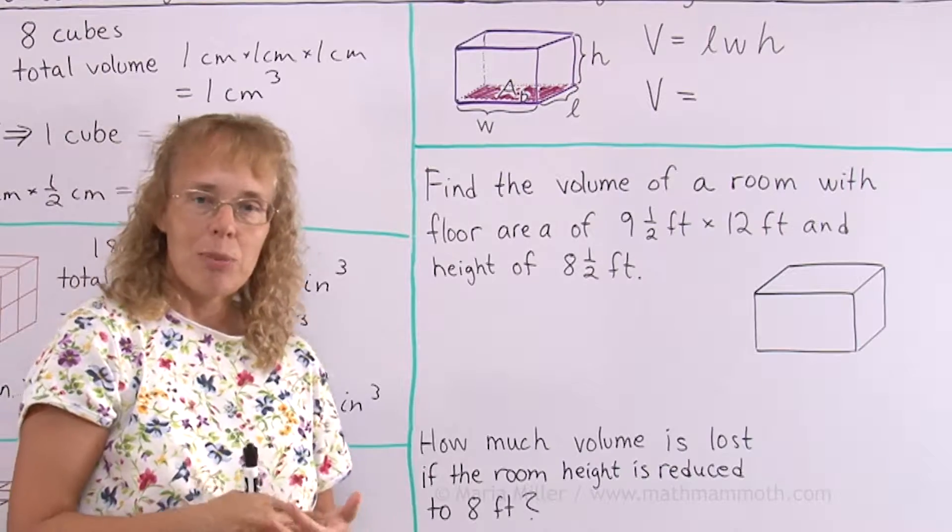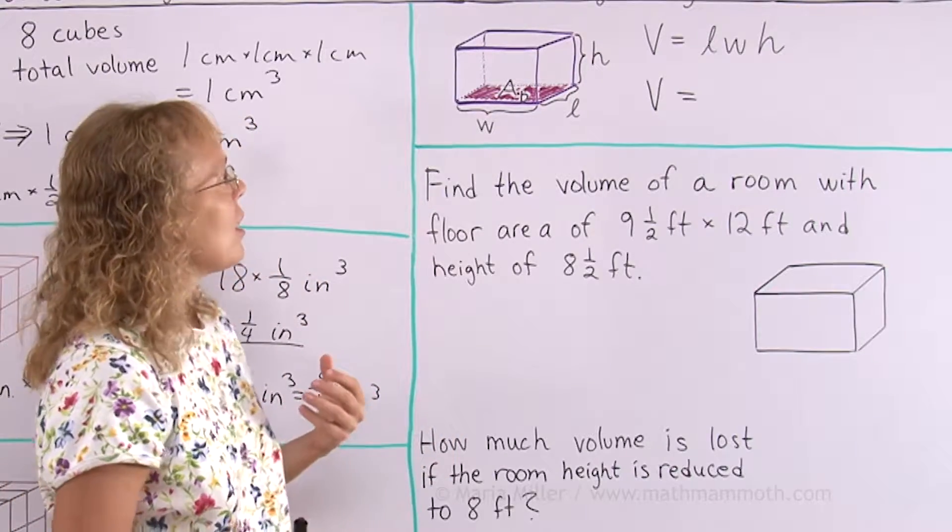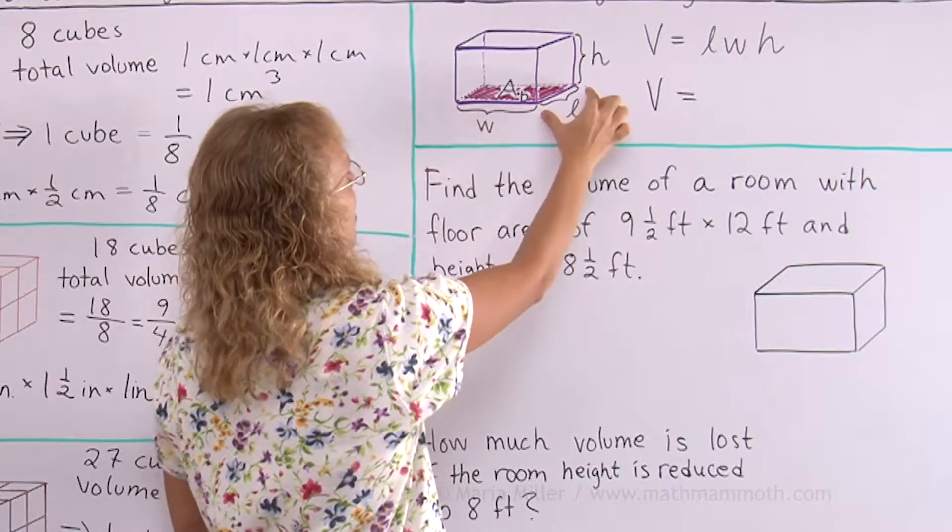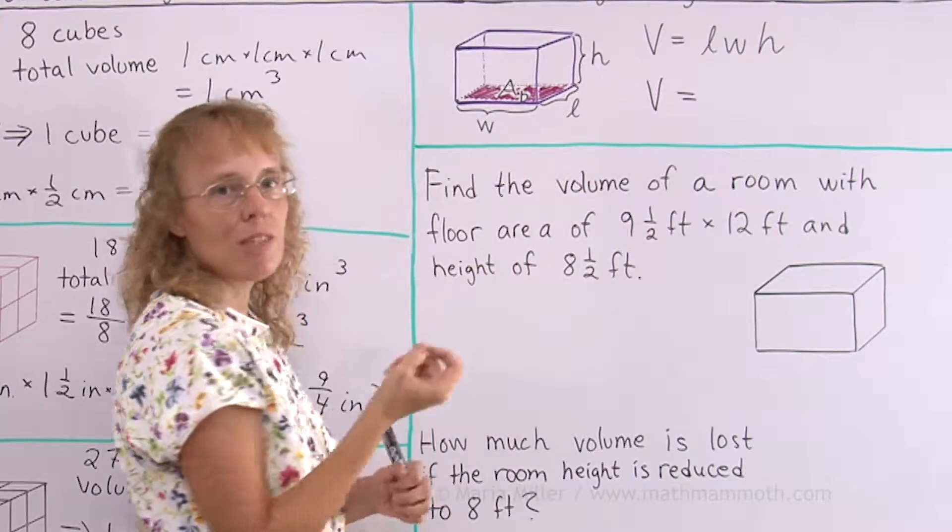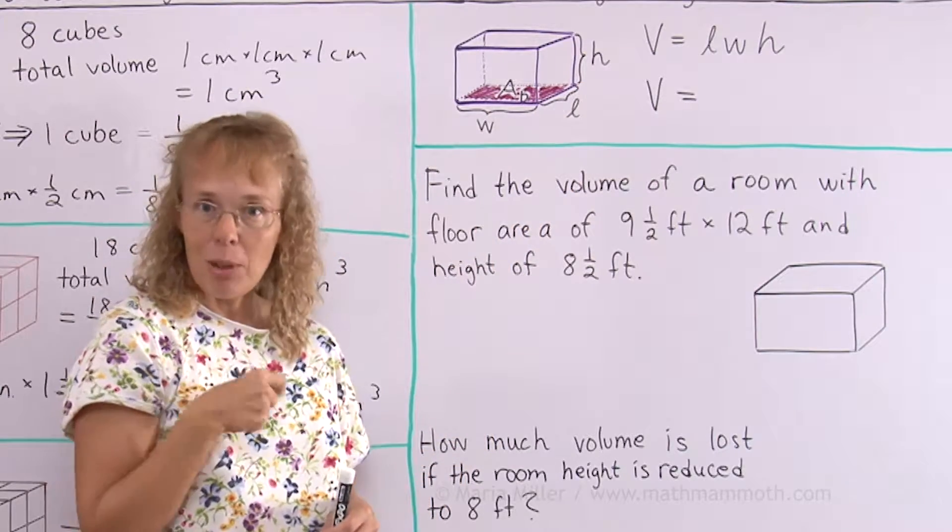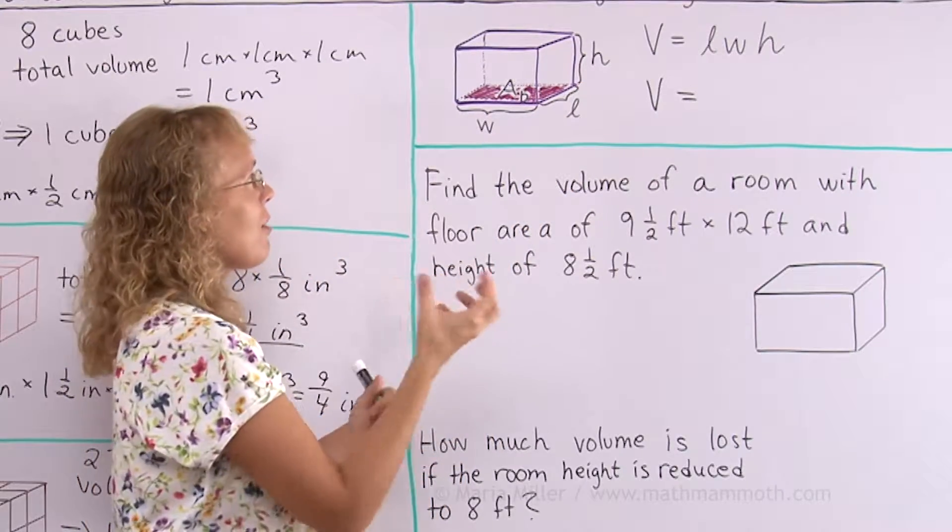Now, there is another way to express this formula. Another way you can think about it is that if you notice the width and the length, or width and depth, whichever you want to think about, these two dimensions multiplied together actually gives you the area of the bottom.